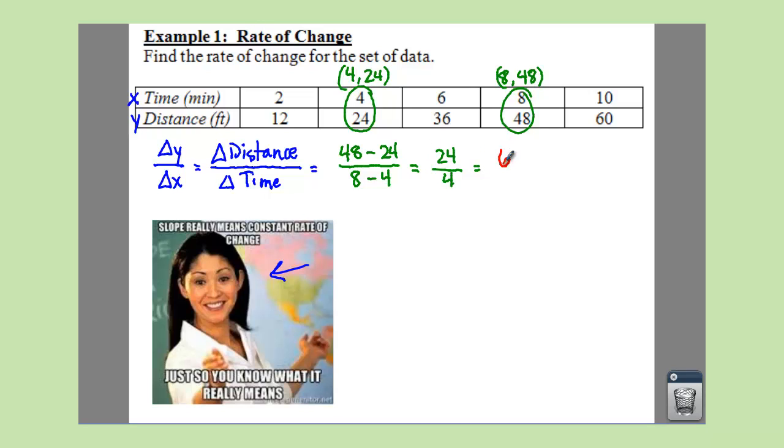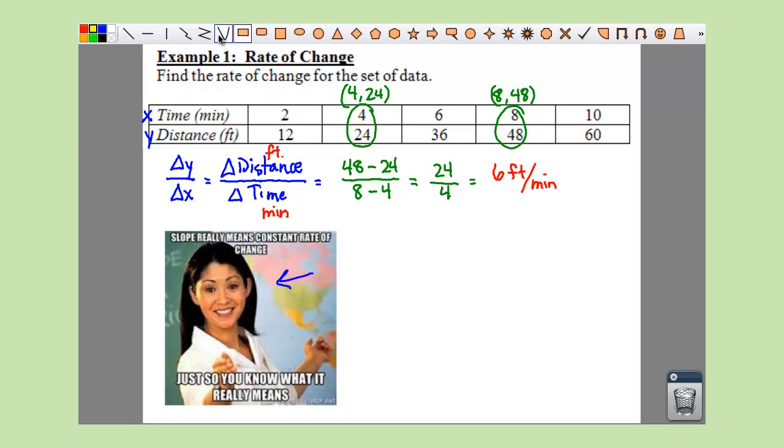When you subtract these, you end up getting 24 over 4, which reduces and gives you a 6. Since we're talking about rate of change, we need to know what two things we are comparing here. The top is distance measured in feet, so we're changing 6 feet per our time, which is in minutes. So our answer would end up being 6 feet per minute.